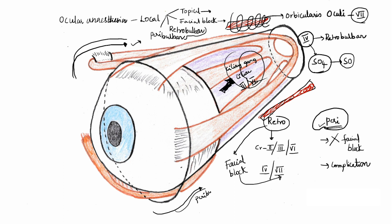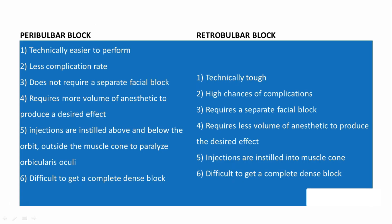Looking at the comparison table — peribulbar block is superior. Peribulbar block is technically easier to perform, has less complication rate, and does not require a separate facial block. The disadvantage is that because it is given around the muscle cone with its tough muscle coat, it requires more volume of anesthetic to produce the desired effect.